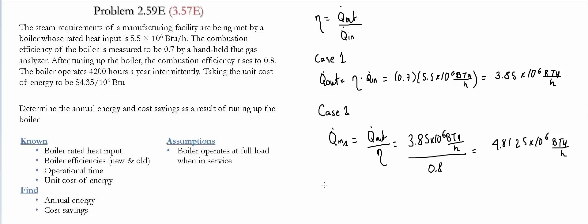So to find out the cost, we first need to find out what is the difference between the two values. So we have 5.5 minus 4.8125.